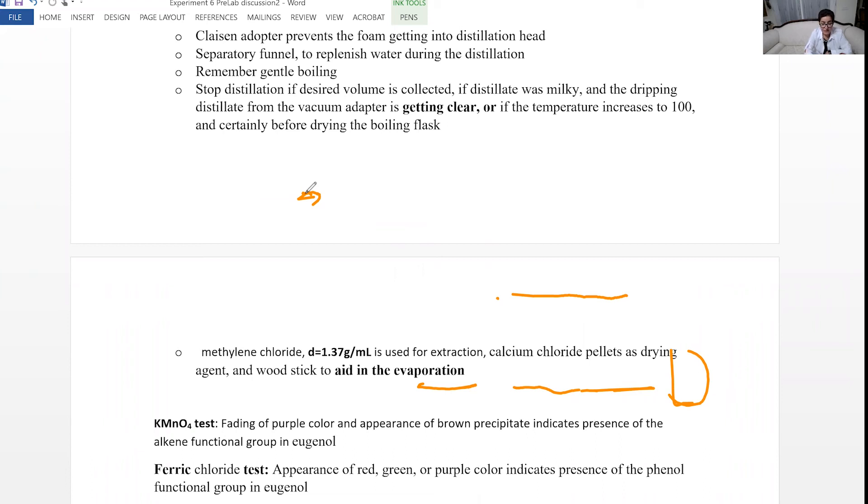After the distillation, in order to separate the oil from the water, we must perform extraction. You already learned about extraction and you can do extraction. Just set up the separatory funnel. Pour the mixture into the separatory funnel. Add the methylene chloride for the extraction. Do two steps of extraction. And separate. Methylene chloride is heavier than water, you collect. And because it could be moist, add calcium chloride pellets in order to remove the moisture.